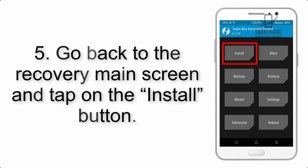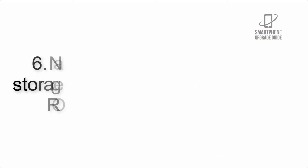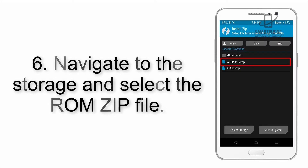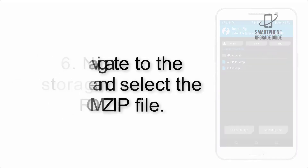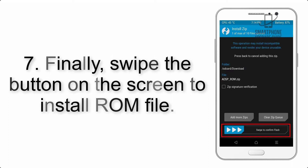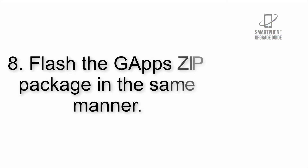Step 5: Go back to the recovery main screen and tap on the Install button. Step 6: Navigate to the storage and select the ROM zip file. Step 7: Finally, swipe the button on the screen to install the ROM file.